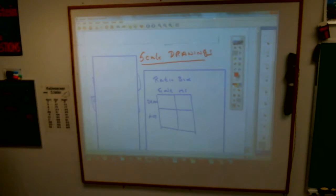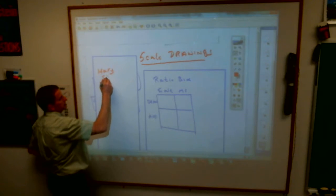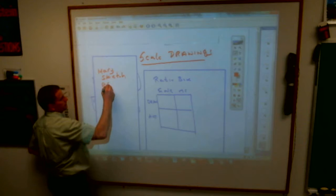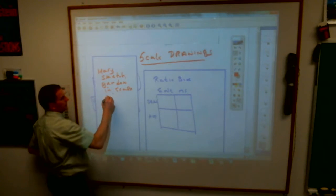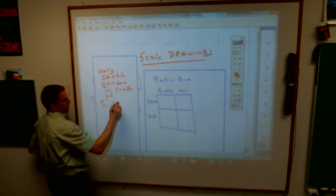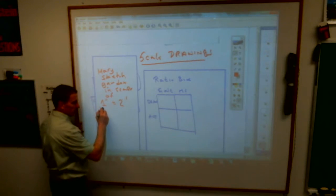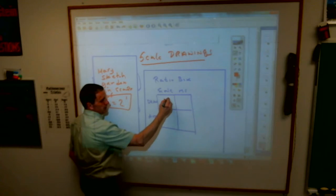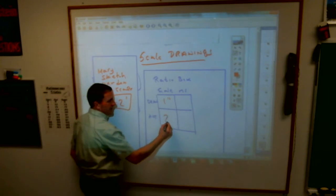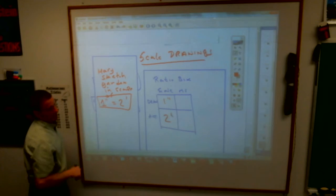Mary sketched a garden with a scale of one inch equals two feet. Mary sketched a garden with a scale of one inch equals two feet. So that, ladies and gentlemen, boys and girls, is your scale, and that is what you put here. On the drawing, one inch equals, in actuality, two feet. And then you can put whatever other numbers they give you there to figure out the thing.